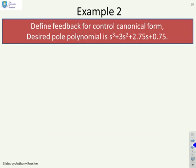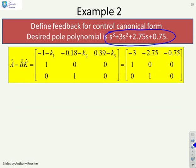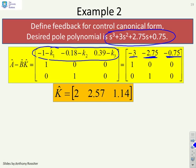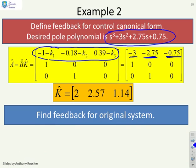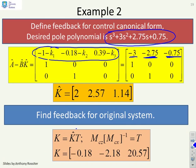The desired pole polynomial is s³ + 3s² + 2.75s + 0.75. We define feedback in the canonical form so the top row becomes [-3, -2.75, -0.75], giving K̂ = [2, 2.57, 1.14]. The final step uses K = K̂ · T using T from the previous step, and there is the K for the original system.